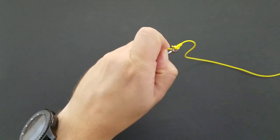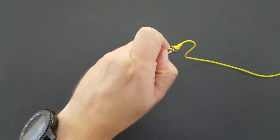Now you have a tag end here you can cut off. And with that, you have a completed Trilene knot.